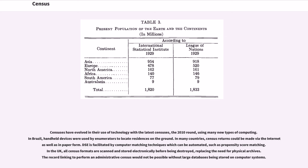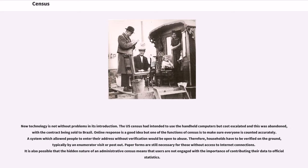DSE is facilitated by computer matching techniques which can be automated, such as propensity score matching. In the UK, all census formats are scanned and stored electronically before being destroyed, replacing the need for physical archives. The record linking to perform an administrative census would not be possible without large databases being stored on computer systems. New technology is not without problems in its introduction — the US census had intended to use handheld computers but cost escalated and this was abandoned, with the contract being sold to Brazil. Online response is a good idea, but one of the functions of census is to make sure everyone is counted accurately.